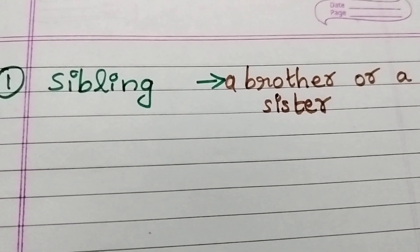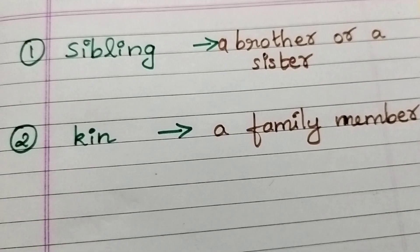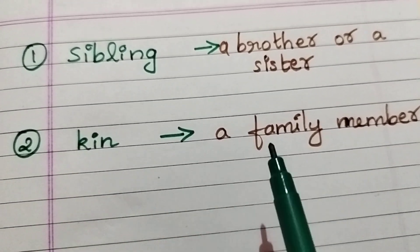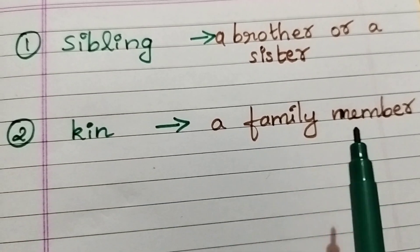Sibling means a brother or a sister. Kin means a family member.